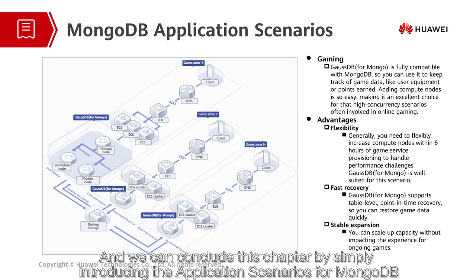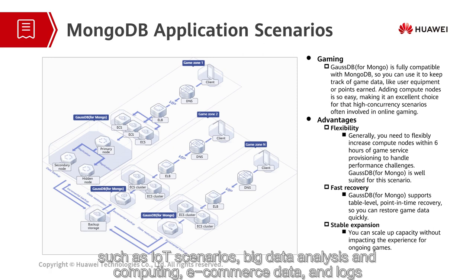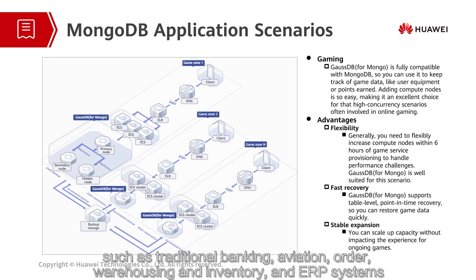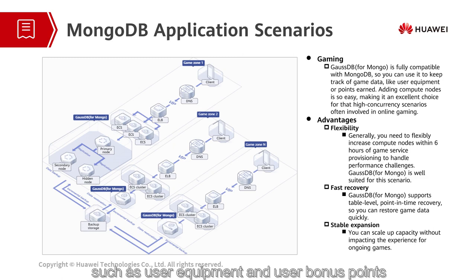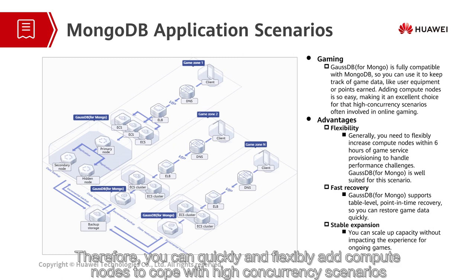MongoDB is suitable for scenarios where a large amount of formatted or semi-formatted data needs to be stored, such as IoT scenarios, big data analysis and computing, e-commerce data, and logs. However, it is not applicable to scenarios that have high requirements on data reliability and consistency, such as traditional banking, aviation, order management, warehousing and inventory, and ERP systems. Compatible with the MongoDB protocol, game applications can store game data such as user equipment and user bonus points. During peak hours, gamers have high requirements on concurrency, so you can quickly and flexibly add compute nodes to cope with high concurrency scenarios.